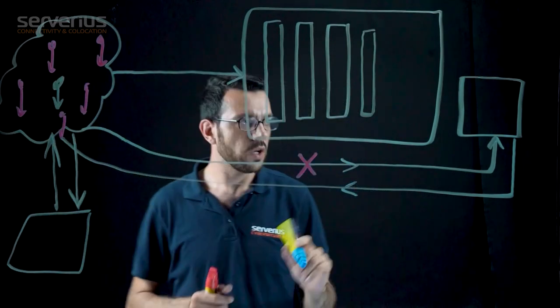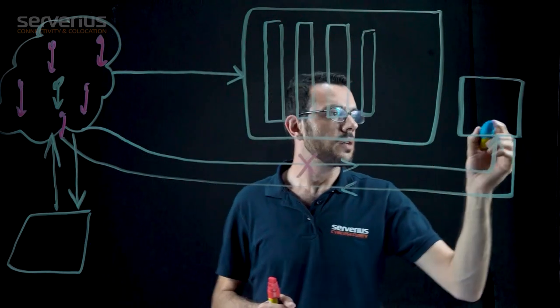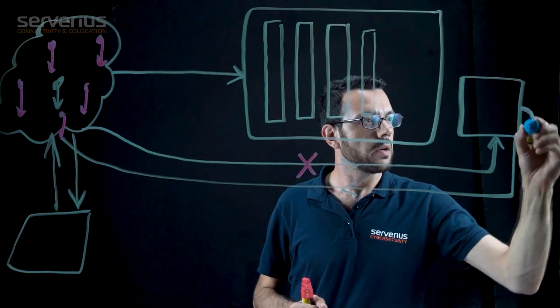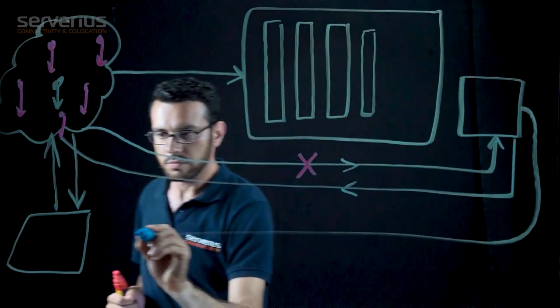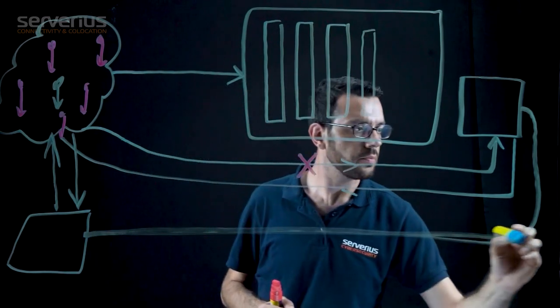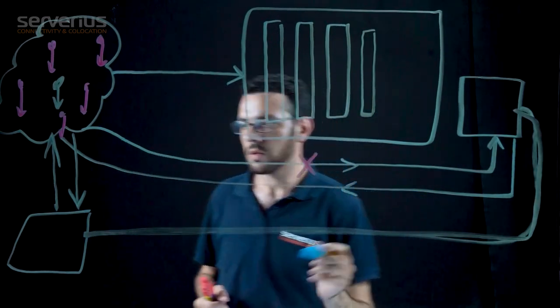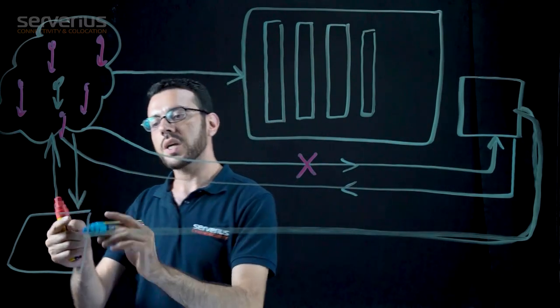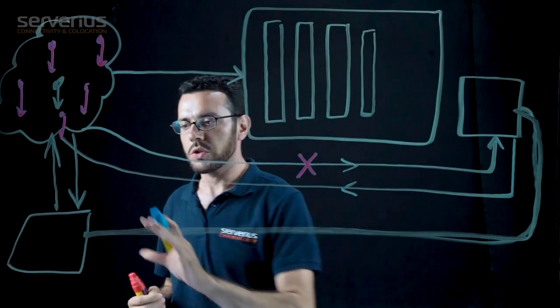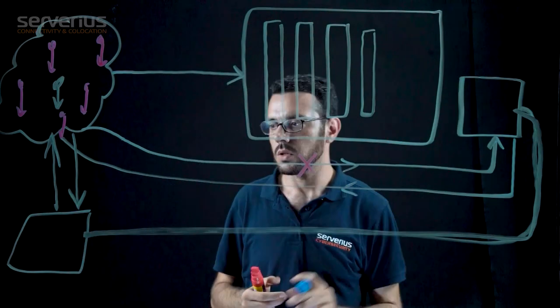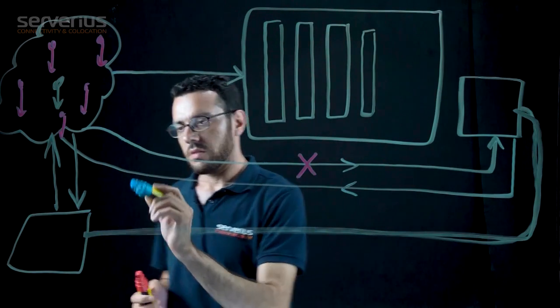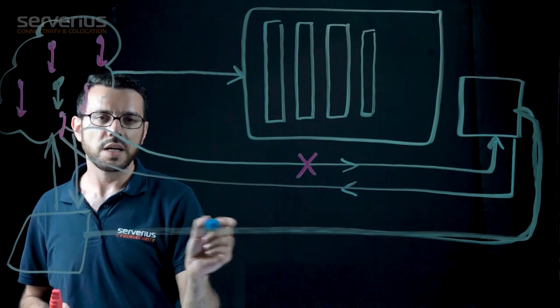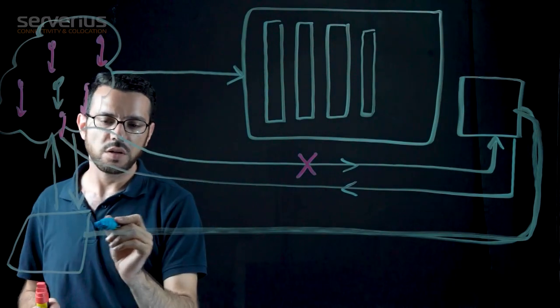In this case we can set up a GRE tunnel through the internet, and inside this GRE tunnel we can initiate a BGP session between your router and our router. So you will stop announcing your IP address directly to the internet and will announce it through the BGP session instead.